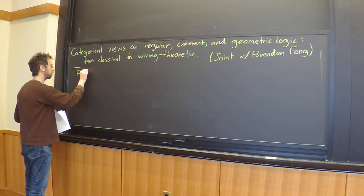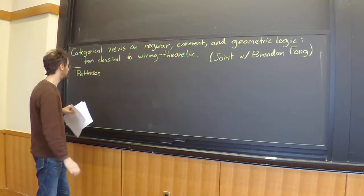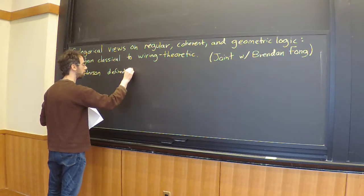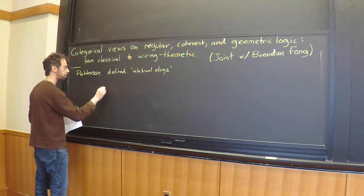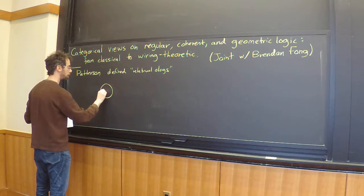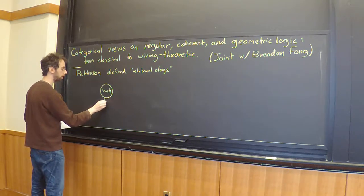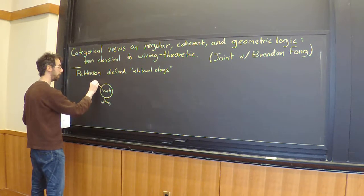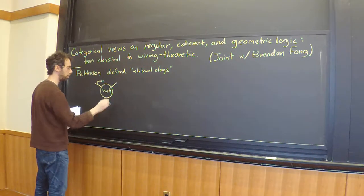Someone named Evan Patterson defined something he called relational O-logs. In this world you can say things like: works, and everyone who works has a salary, and everyone who works is a person, and everyone who works, works at a company.